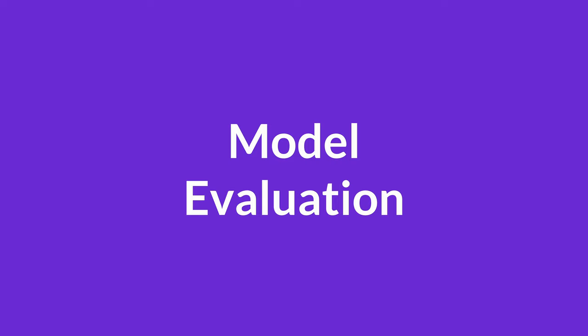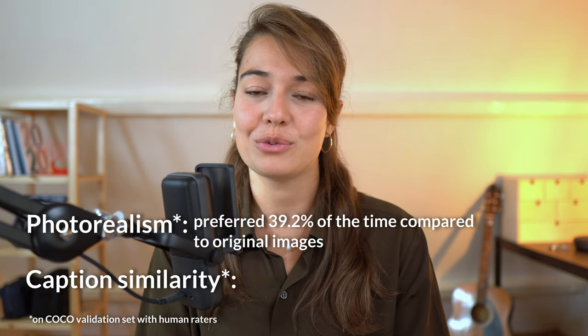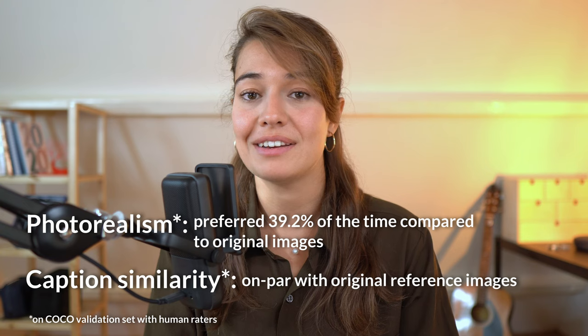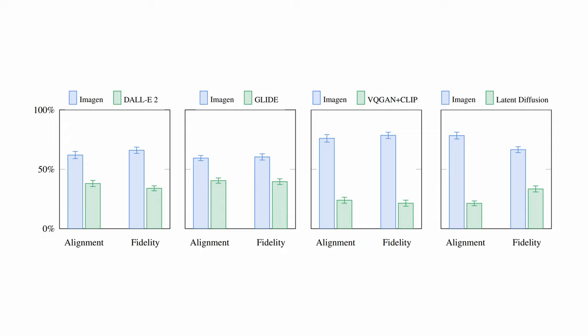We are quickly approaching a point where evaluating image generation models will be subjective, but we're not there yet. Based on the authors' tests, Imagen was preferred 39.2% of the time compared to the original reference image in terms of photorealism, and was on par with reference images in accurately depicting the caption. The authors also developed their own set of challenging prompts to evaluate image generation models, called DrawBench. Based on reported results with human raters, Imagen outperforms DALL-E 2, GLIDE, and other image generation models in both image fidelity and caption alignment.